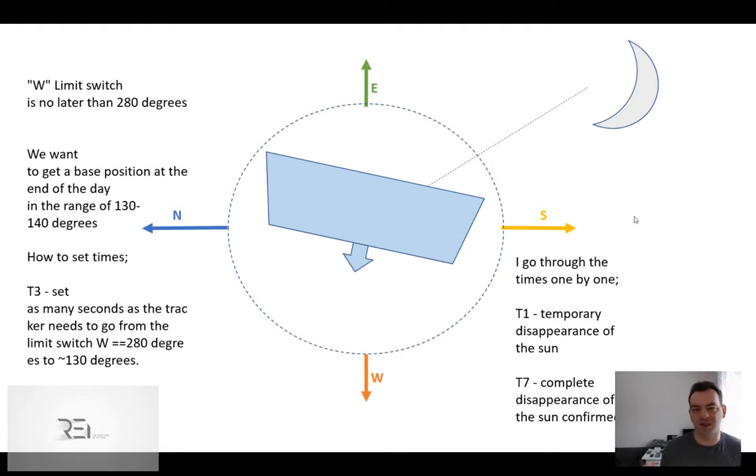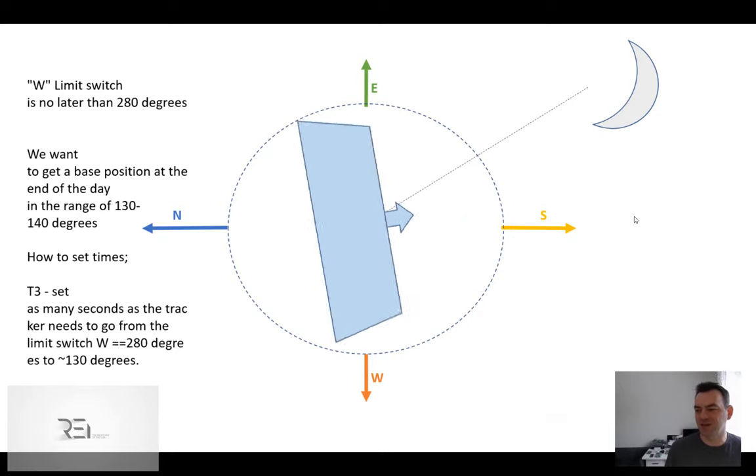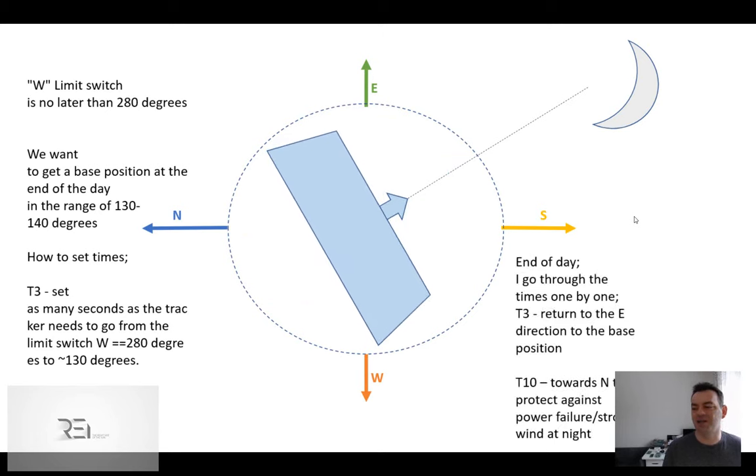T7 doesn't have to be so big. You can put there 1000 seconds or maybe less, and that will be enough. But T1 should be as big as possible, of course not longer than the whole night because you want to be prepared for the next day. Once T1 is finished and T7 is finished, then you set back to the standard procedure.